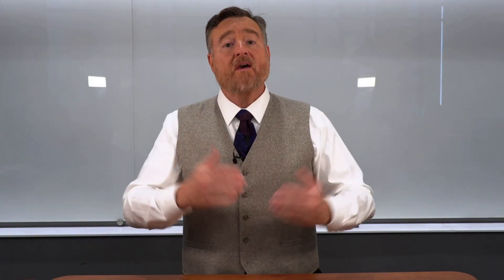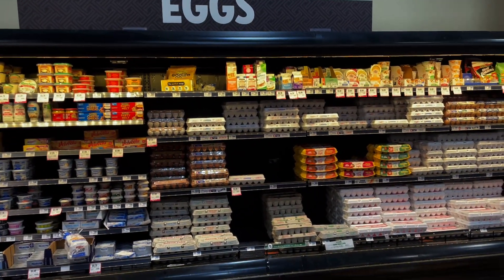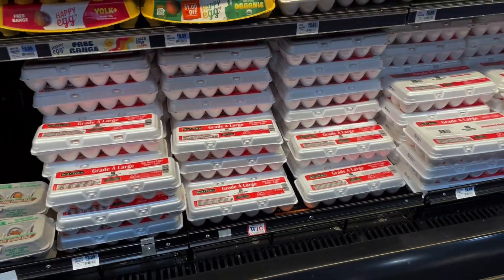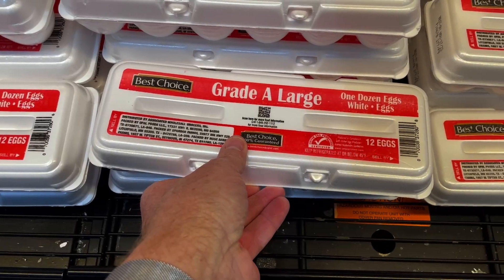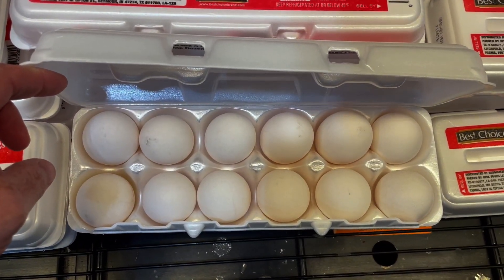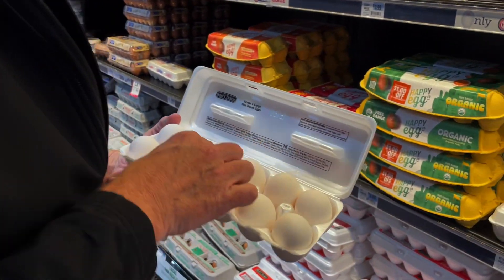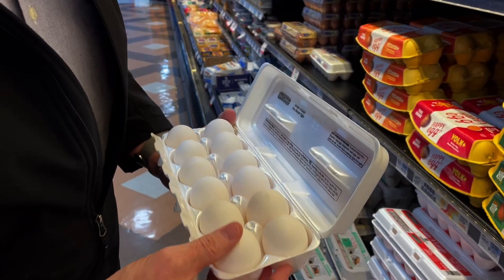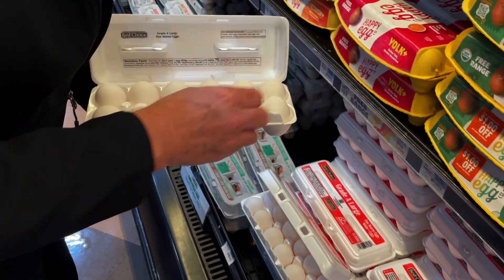Imagine that we go on a trip to the grocery store, and on our shopping list we need to buy eggs. As we approach this large collection of eggs, each in a container of 12, we want to make sure that we don't get a container that has a broken egg. So we open each container, check out all of the eggs, and if we find one that's broken, we'll probably exchange it for a non-broken egg from a different container.